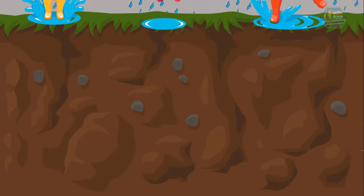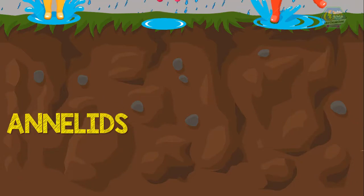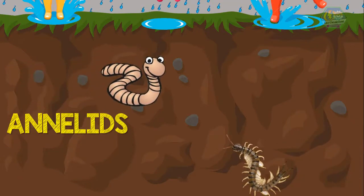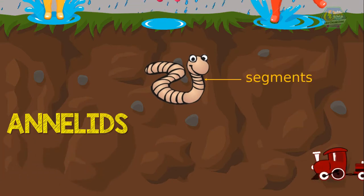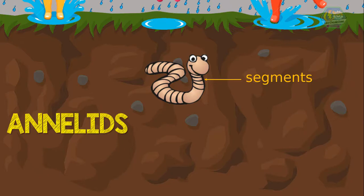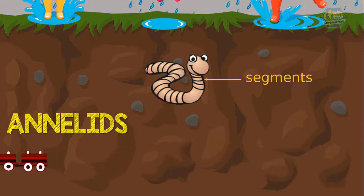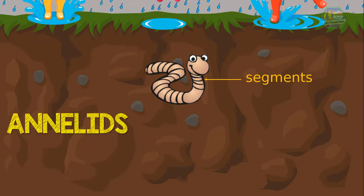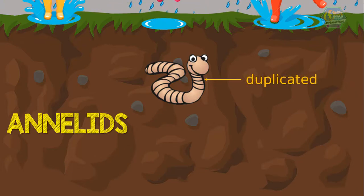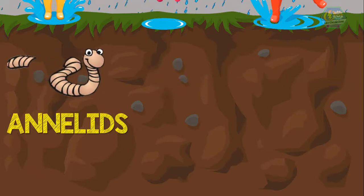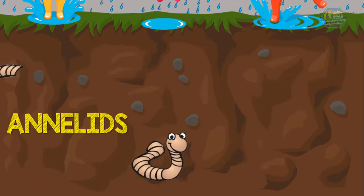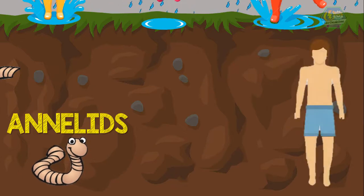Earthworms are the classic example of annelids. Annelids are all of the segmented worms — that means they have segments in their bodies, like the cars of a train. They are long and each segment carries something. They are special because they actually have loads of body parts that are duplicated in each segment, meaning each segment can act on its own.